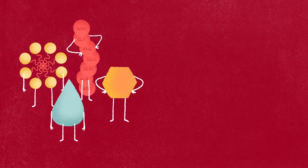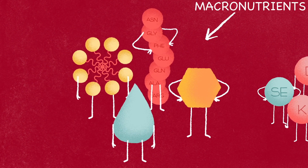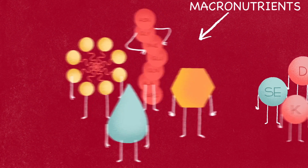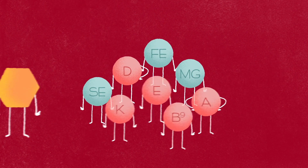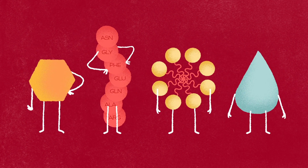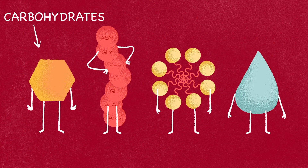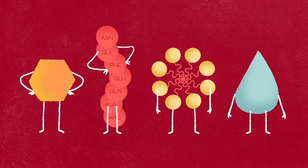Among the components of food, we usually distinguish between macro and micronutrients, and each has its own function. Macronutrients are carbohydrates, proteins, lipids and water.